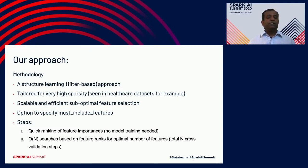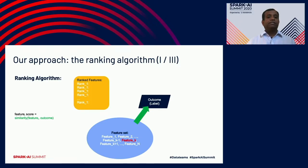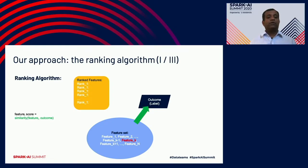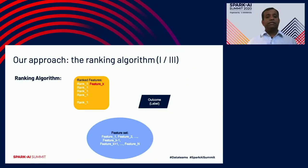We looked for a solution that fits our needs, including must-include features. The steps are: quick ranking of all feature importances with no model training needed, then a linear search based on the ranked features, then training an n-cross-validation step model to find the best model from those features. We calculate similarity between each feature and the outcome label to find the highest correlation. The feature with the highest correlation is placed in the ranked feature bucket with a score. Feature k is now in the ranked bucket because it is highly correlated with the label outcome.